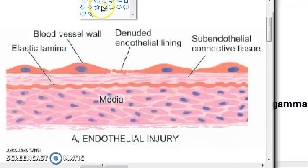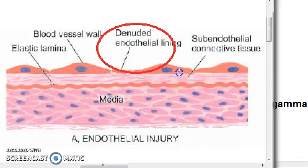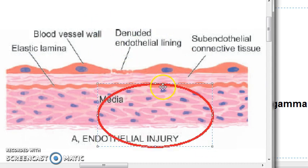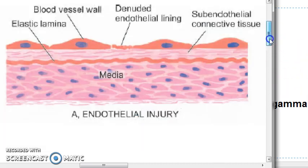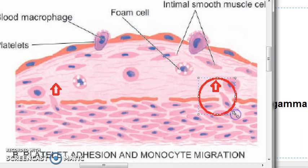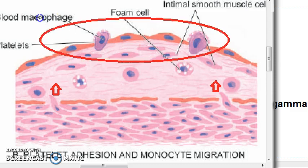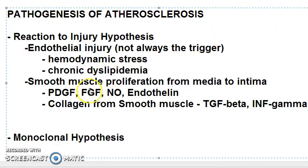Looking at the diagram: here is the continuous endothelium, and in between there is a denuded endothelial lining — this is the beginning of the process. The tunica media has smooth muscles, and the tunica intima is here with connective tissue. After endothelial injury, smooth muscles from the media start proliferating into the intima. Any endothelial damage also attracts platelets.